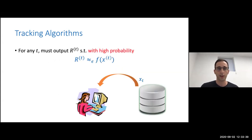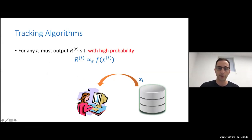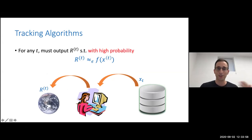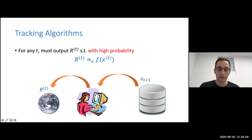To see this in action: we have some source of data x_t that goes to the streaming algorithm. The streaming algorithm does some processing, stores some small state, and then publishes this output r_t to the world. This is important — that it goes to the world, we'll talk about this in a second. At the next step, we have x_{t+1}, again some processing and update to some small state, and again we publish r_{t+1}.